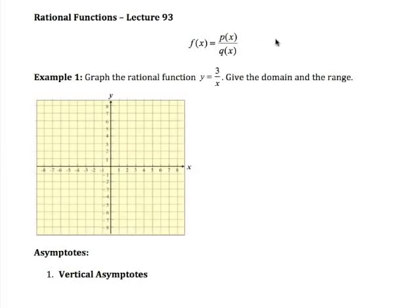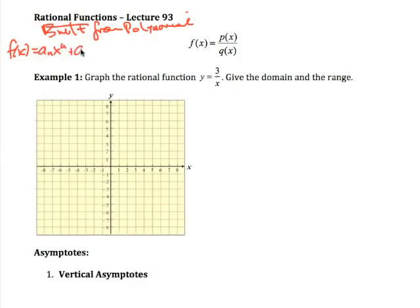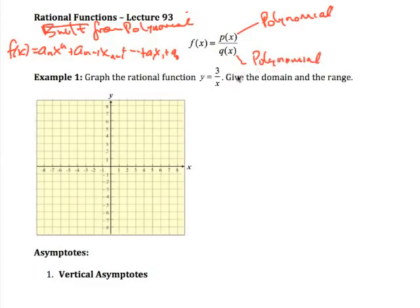In this lecture we're going to begin talking about rational functions. These are functions built from polynomials. A polynomial is a function of the form a_n * x^n down to a_1 * x + a_0. A rational function is a polynomial on top divided by another polynomial. These polynomials may differ in degree — it could be a quadratic over a cubic or vice versa — but the key point is that both are polynomials.